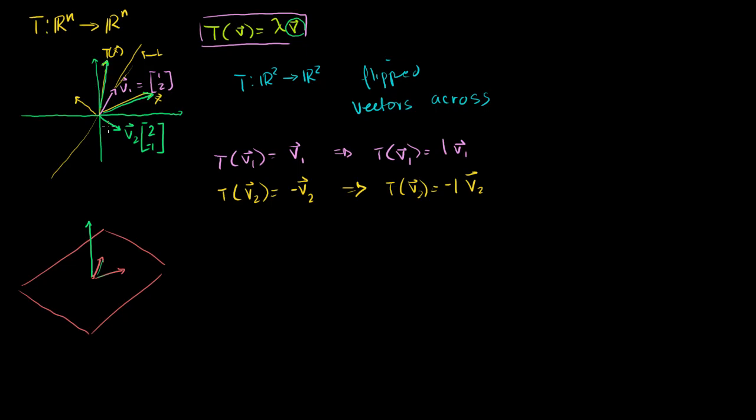The vectors that get scaled up might go from this direction to that direction, or maybe that's x, and then the transformation of x might be a scaled up version of x. But the actual line that they span will not change. And so that's what we're going to concern ourselves with.